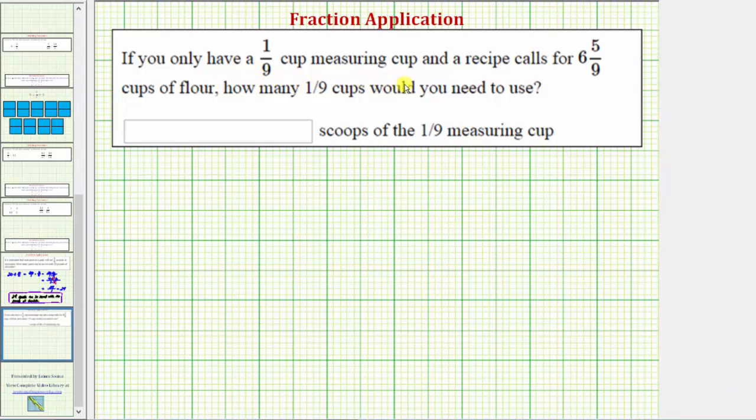If you have a one-ninth cup measuring cup, and a recipe calls for six and five-ninths cups of flour, how many one-ninth cups would you need to use?